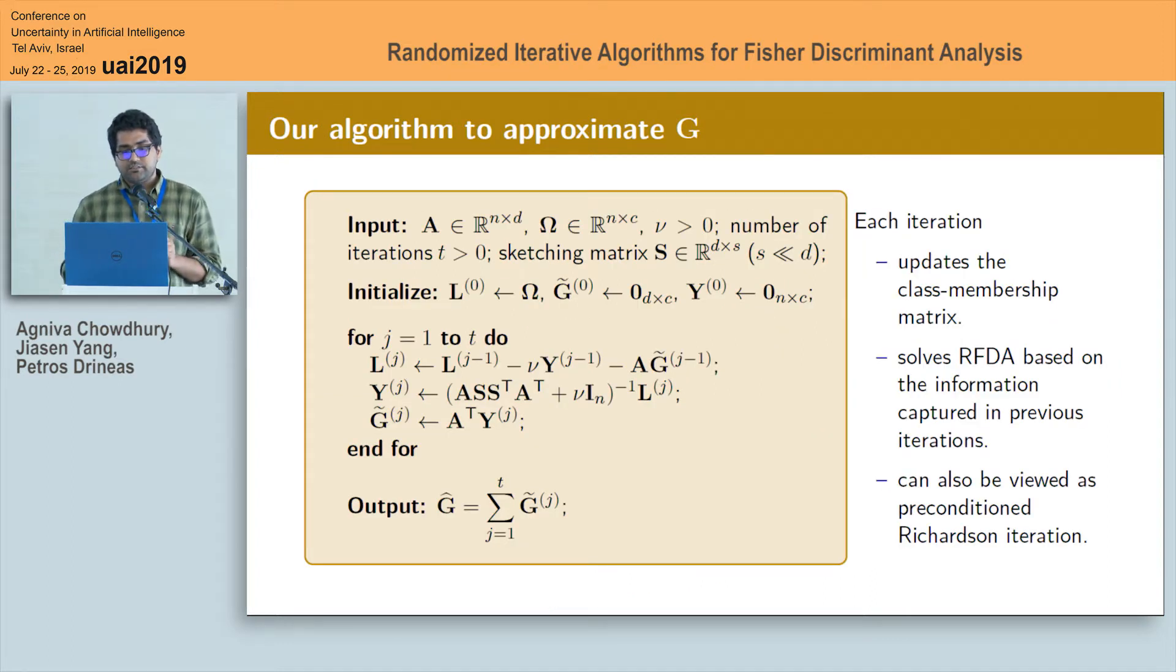Next, here is our iterative algorithm which takes the following inputs, the data matrix A, the class membership matrix omega, regularization parameter nu, number of iterations t and a suitably constructed sketching matrix S. Later on, I will briefly talk about how to construct S.